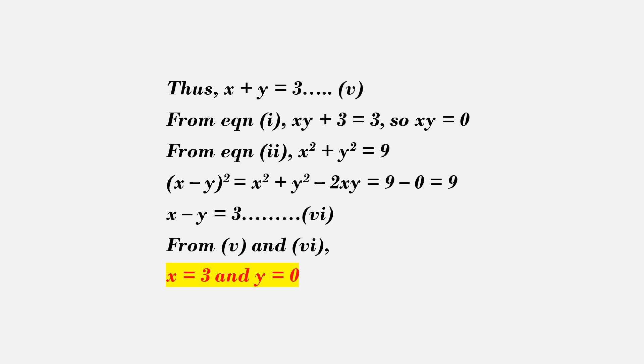From x plus y equals 3 and x minus y equals 3, we get x equals 3 and y equals 0.